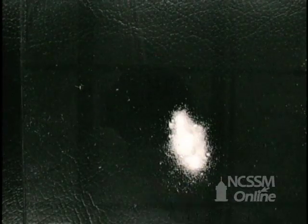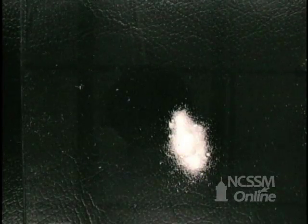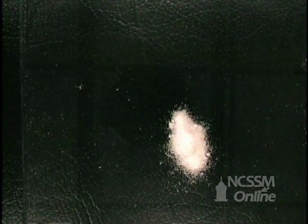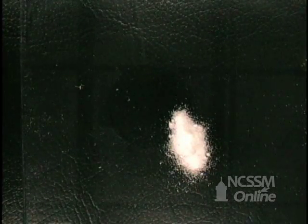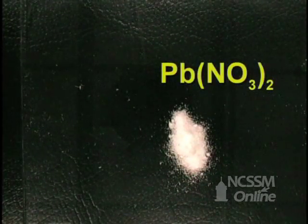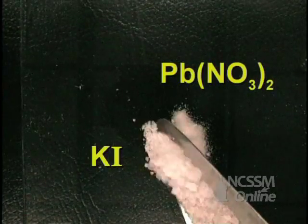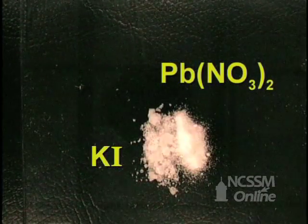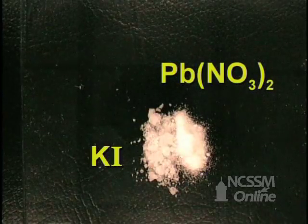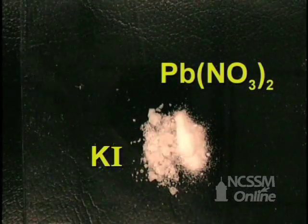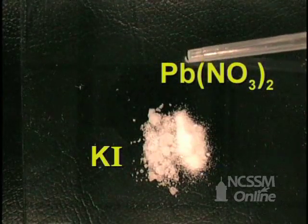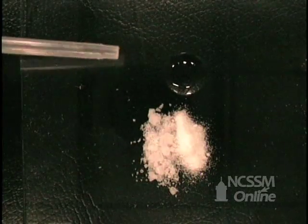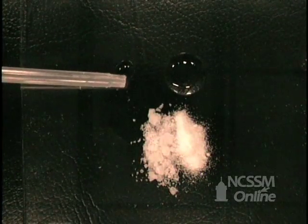Let's look at the effect of the state that a substance is in and the rate of the reaction. Here we're going to add some lead nitrate and some potassium iodide. Both are solids at room temperature. If we put them next to each other, nothing happens.